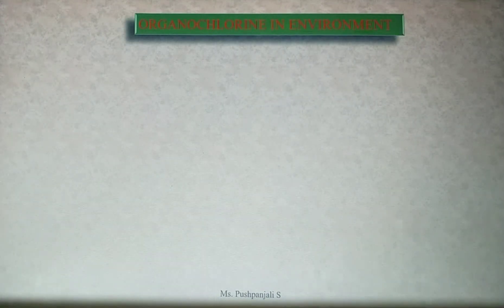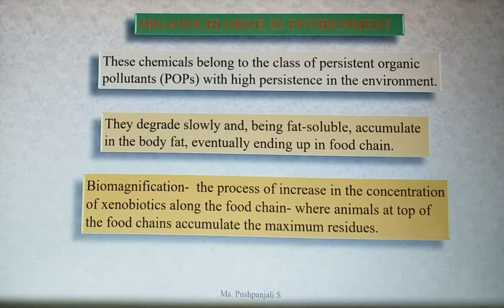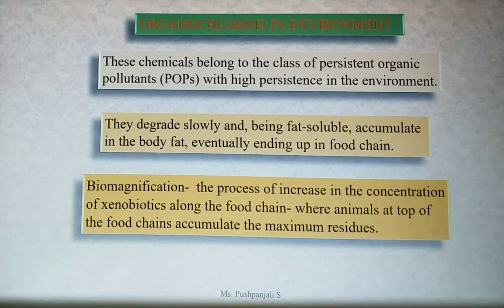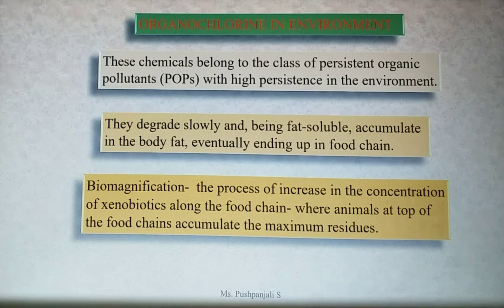Organochlorine in the environment: These chemicals belong to the class of persistent organic pollutants with high persistence in the environment. They degrade slowly and, being fat-soluble, accumulate in body fat, eventually ending up in the food chain. The process of increase in the concentration of these xenobiotics along the food chain is termed biomagnification.